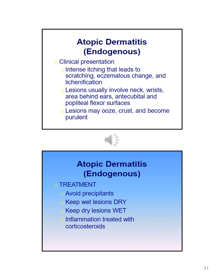The clinical presentation of atopic dermatitis includes intense itching that leads to scratching, eczematous changes, and lichenification. Lesions usually involve the neck, wrists, behind the ears, and the antecubital and popliteal flexor surfaces. The lesions may even ooze, crust, and become purulent.